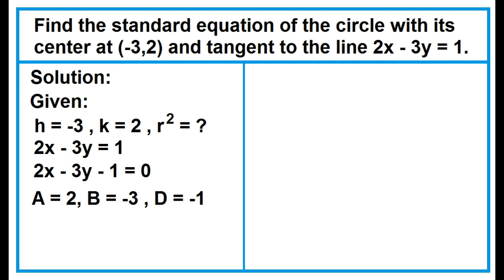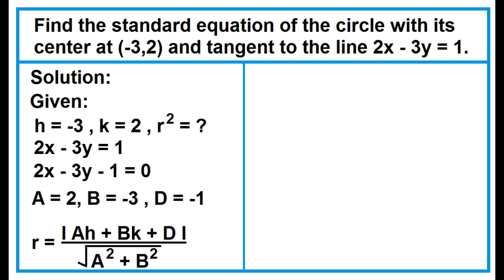To find the distance from the center to the point of tangency, use this formula: r is equal to the absolute value of the quantity ah plus bk plus d, all over the square root of the quantity a squared plus b squared.